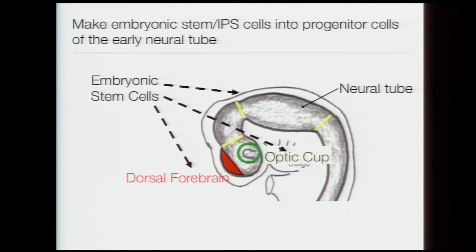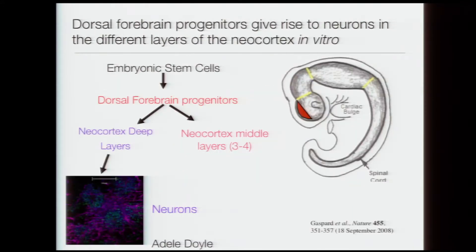Here is the neural tube. The question is, can we take embryonic stem cells and make them into progenitor cells at different points on this neural tube? We don't fully understand how they make these choices, but from published literature just this year, we already know how to take these cells and make them into progenitor cells that lie in specific regions. This is the optic cup that gives rise to the retina. If you take ES cells and make them into dorsal forebrain progenitors and just let them go in a dish, they automatically give rise to the pyramidal neurons of the neocortex — first to the deep layers, and then temporarily to layers three and four. If you make ventral forebrain cells, you can get the inhibitory interneurons that come up too.